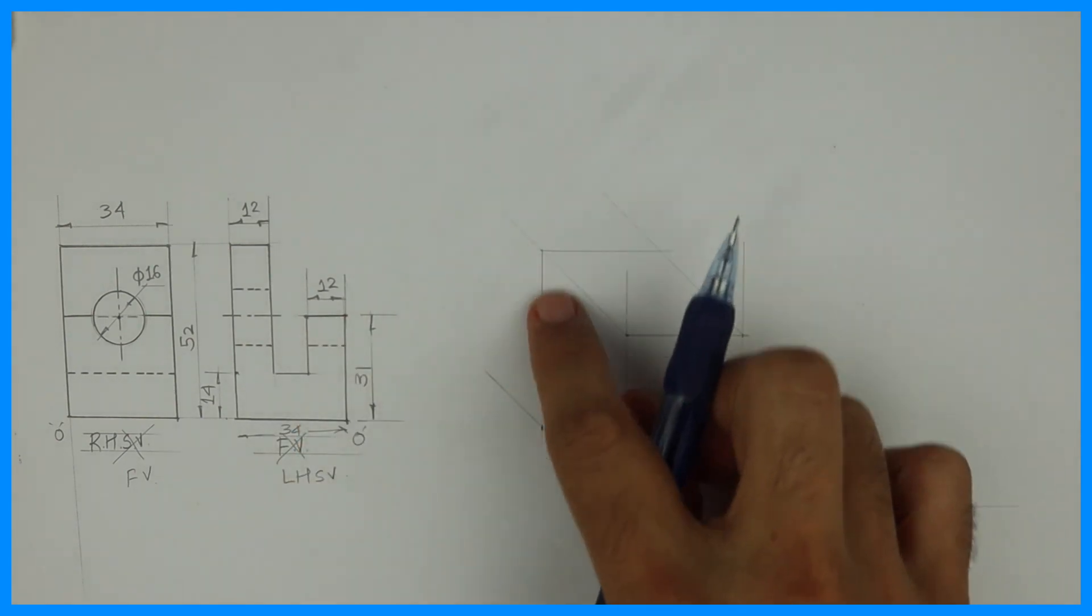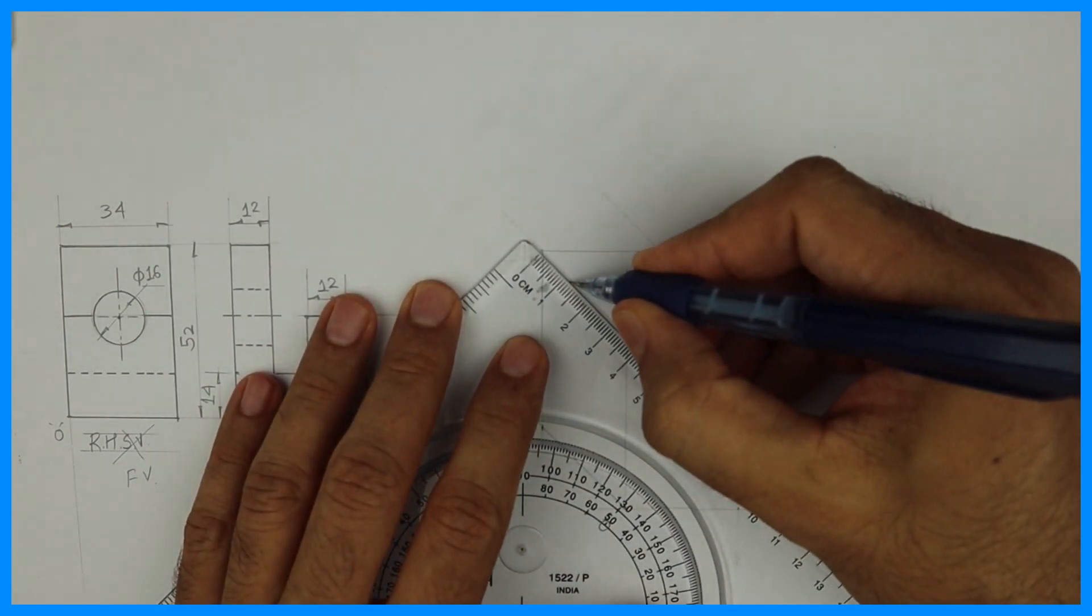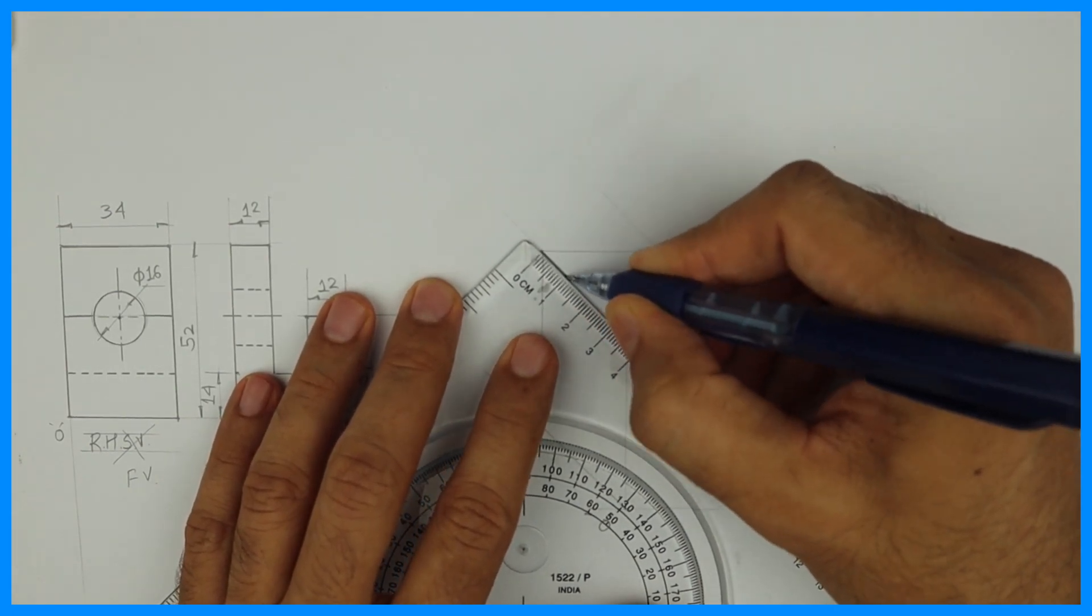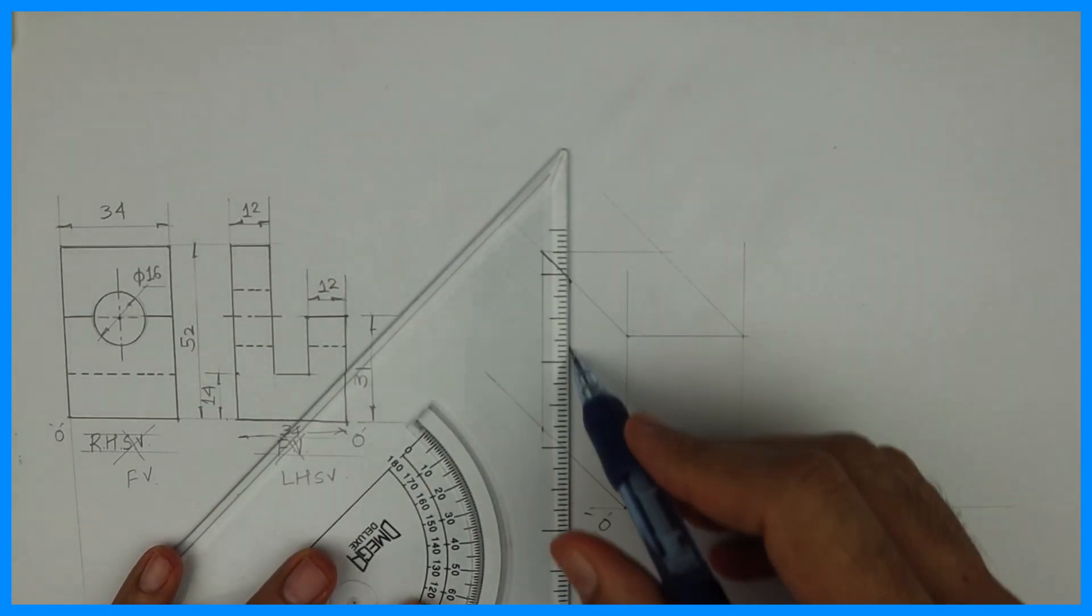Now see this in front view there are two parts. In side view there is only one part. So we'll start with side view. So we'll take 12. We'll go down.